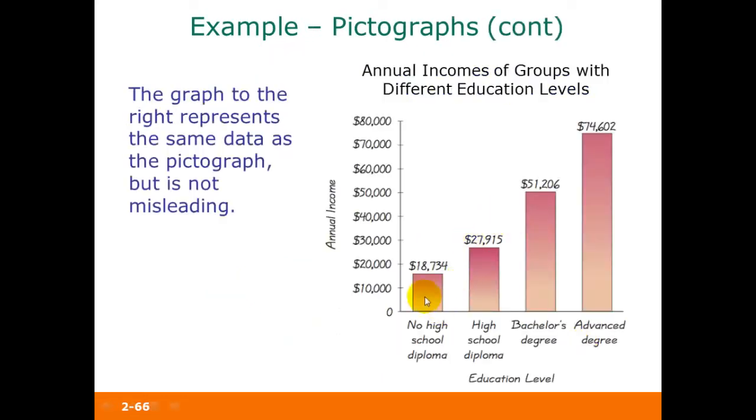Let's look at this with just a regular bar graph instead of using the pictograph. Notice here, obviously, the income for those with an advanced degree is still quite a bit more than for those with no high school diploma, but the differences are not so exaggerated. This is a much more fair way to represent this data.